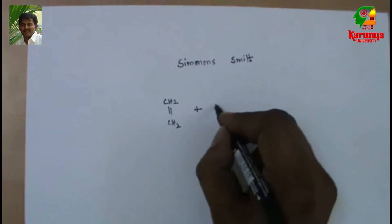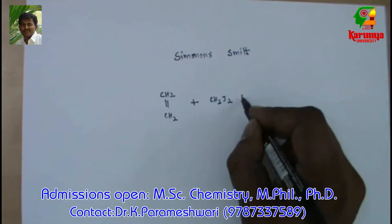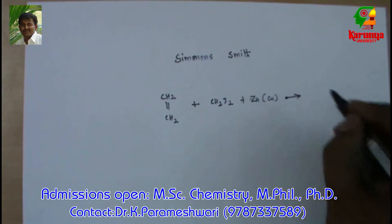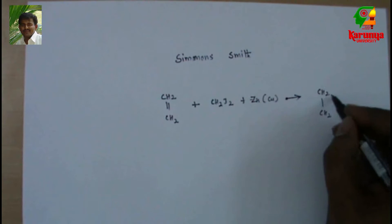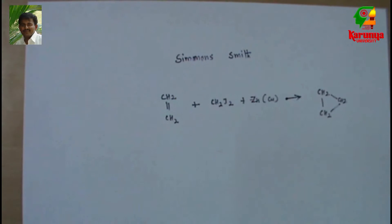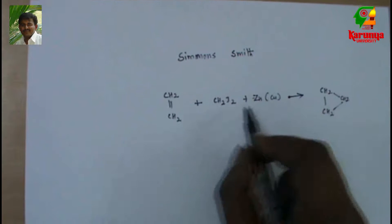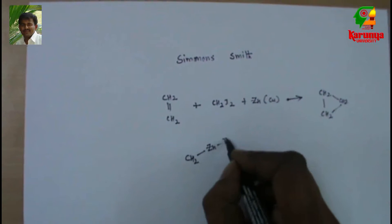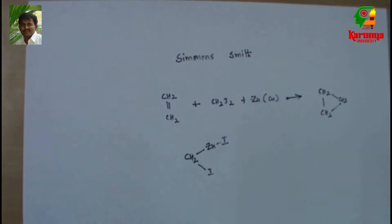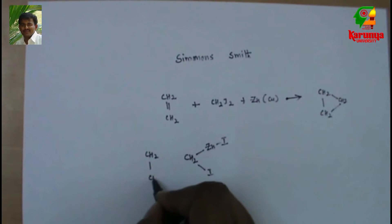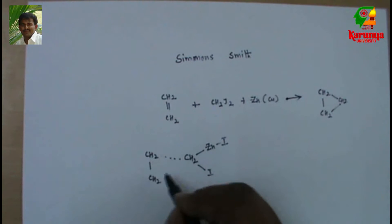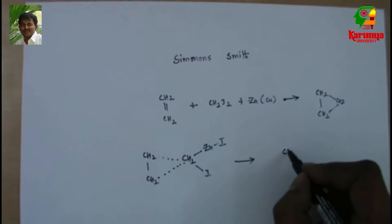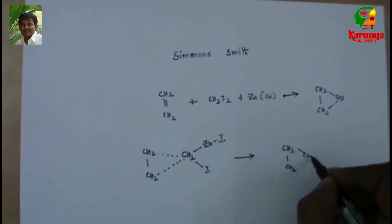Now let us go to the Simmons-Smith reaction. In this reaction, when an alkene is treated with diiodomethane in the presence of zinc-copper couple, cyclopropane is formed. The mechanism: zinc gets inserted between CH2 and I to give an intermediate. This coordinates with the alkene to give an intermediate, which undergoes a concerted reaction to give cyclopropane.